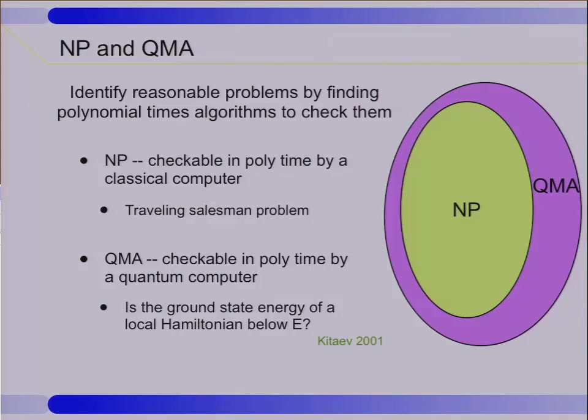Correspondingly, to this NP question is the class that's called QMA. And that actually stands for Quantum Merlin Arthur. If you ask me afterwards, I'll tell you the little story that goes along with that. But that is the class of problems that can be checkable in polynomial time on a quantum computer. But the problems cannot be solved, or at least we don't know solutions for these problems in polynomial time. Only their answers can be verified.